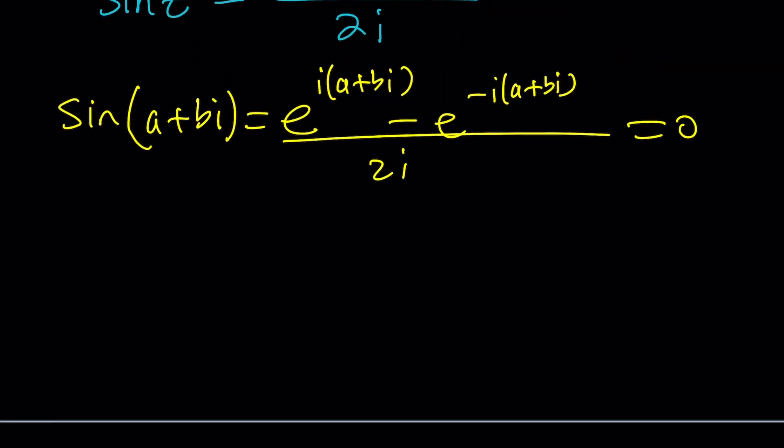Awesome. So that means the numerator is supposed to be zero. And let's go ahead and distribute the exponents. This gives us e to the power ai plus bi squared, which is negative b plus ai, minus e to the power b minus ai.